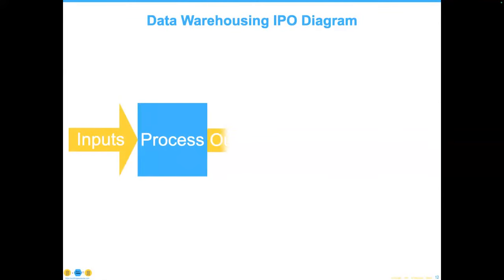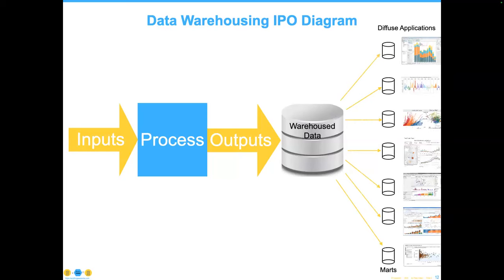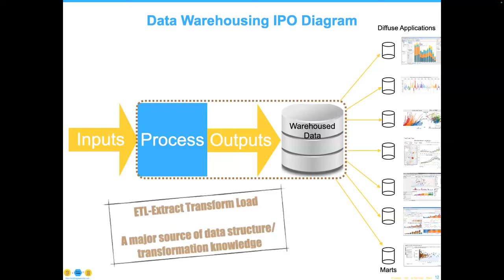The general data warehousing input-output diagram shows some inputs, a process, and some outputs — in most cases, warehoused data. We have a lot of different applications hung off of this data warehouse, which means our data can be reused. Most applications are designed just to feed data; here, we're actually designing for reuse. Our focus of operations is really on something called extract, transform, and load — ETL — which turns out to be a major source of data structure and transformation information.